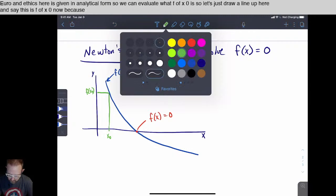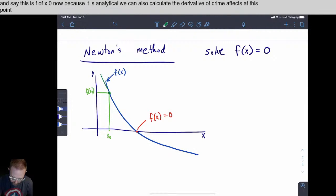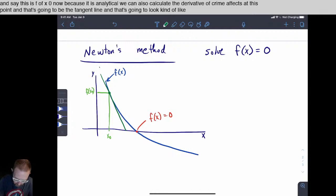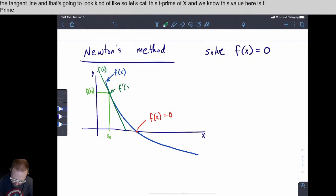Now because it is analytical, we can also calculate the derivative f prime of x at this point. And that's going to be the tangent line. And that's going to look kind of like this. So let's call this f prime of x. And we know this value here is f prime of x zero.